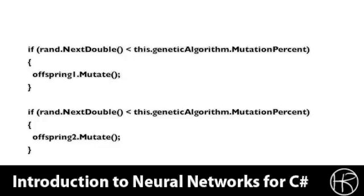If we do want to mutate, we call the mutate function. This is done for both offspring one and offspring two. Mutation is very necessary.